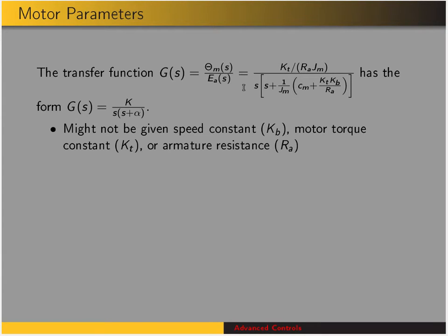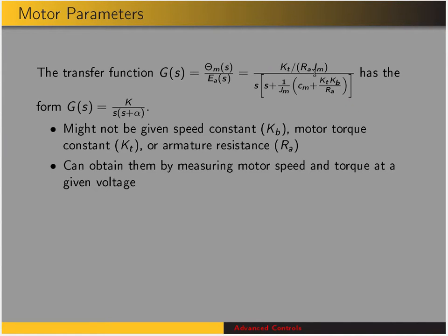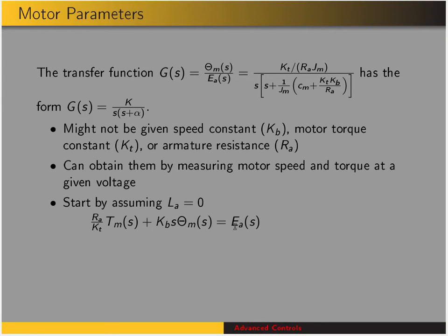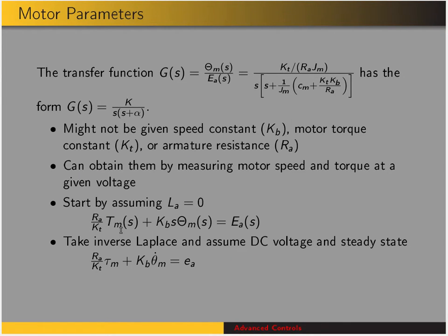This transfer function has a simple form — it's just K over S times (S plus alpha). We might not have the parameters for the motor, such as the speed constant, torque constant, or armature resistance. We can obtain all the motor constants from this expression by measuring motor speed and torque at a given voltage, using a dynamometer. We'll assume LA equals zero and substitute in the expressions for armature current and back EMF to get this expression, where our terms are motor torque, motor displacement, and applied voltage.